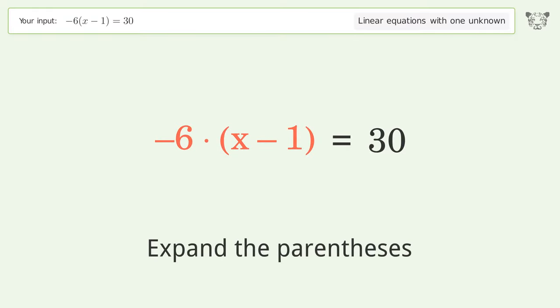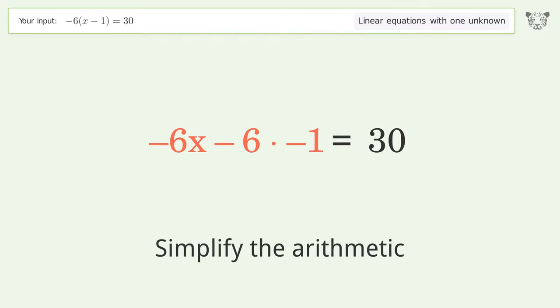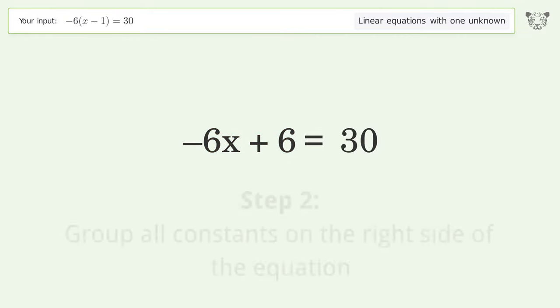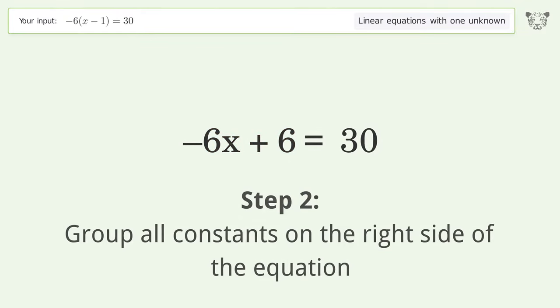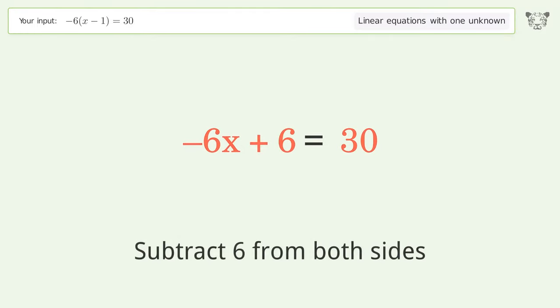Expand the parentheses. Simplify the arithmetic. Group all constants on the right side of the equation. Subtract 6 from both sides.